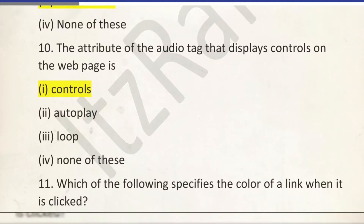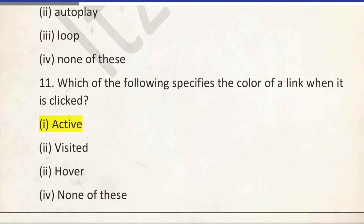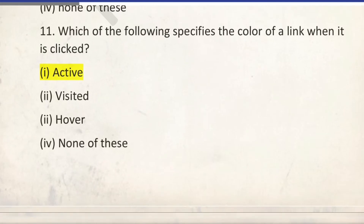Number 10: the attribute of the audio tag that displays controls on the web page — it is 'controls'. Which of the following specify the color of a link when it is clicked? It is 'active'.